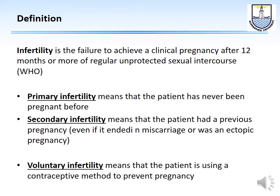Let's start with the definition of infertility. According to WHO, infertility is the failure to achieve a clinical pregnancy after 12 months or more of regular unprotected sexual intercourse. We differentiate between primary infertility — where the patient has never been pregnant — and secondary infertility, where the patient has been pregnant before, even if that pregnancy ended in miscarriage or ectopic pregnancy.